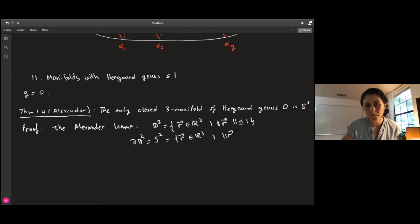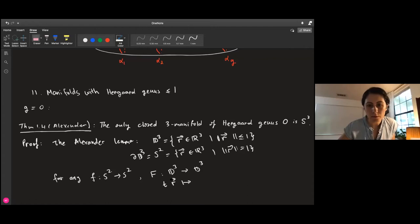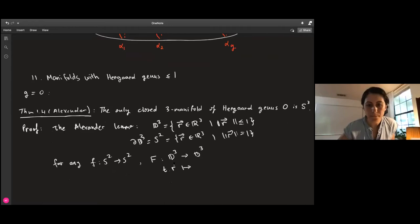This lemma says that for any homeomorphism of S², we can extend it to a homeomorphism of the three-ball. We can think of any point in D³ in terms of a vector in S². The construction is basically T times the image of this vector for every T between 0 and 1.